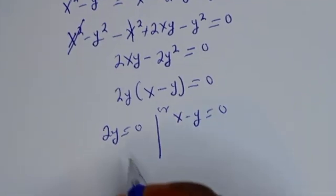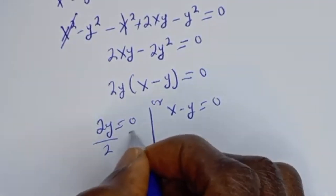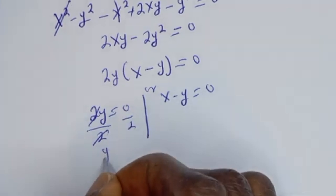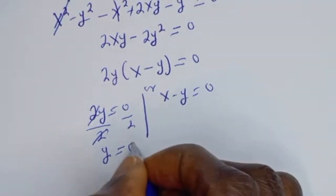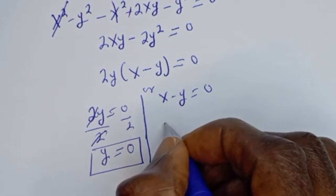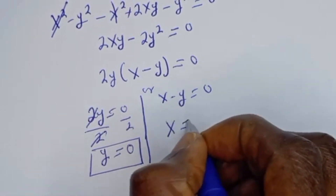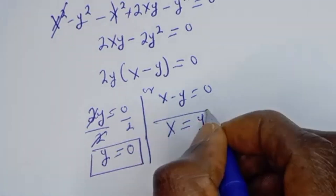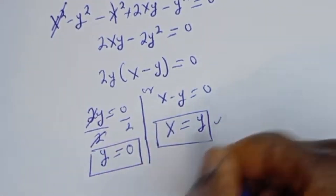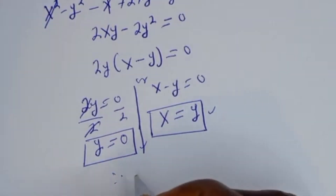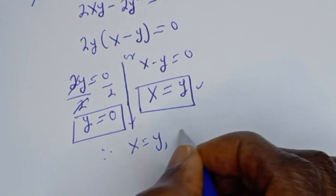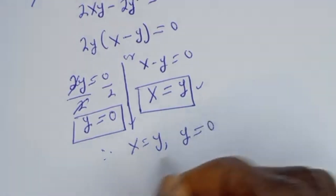Dividing both sides by 2 gives Y is equal to 0. For the second case, X minus Y equals 0, so X is equal to Y. Therefore, X is equal to Y and Y is equal to 0 are the final answers from Method 1.